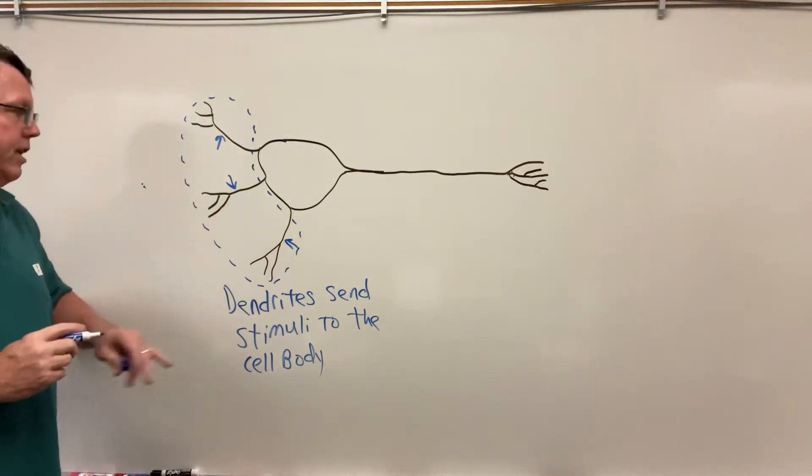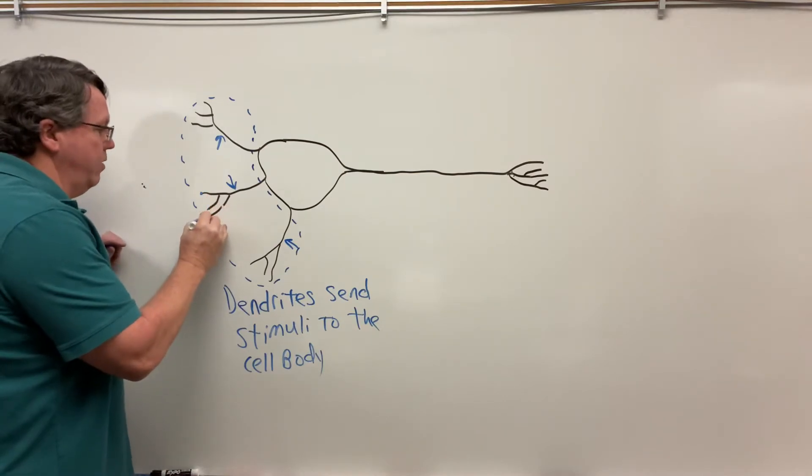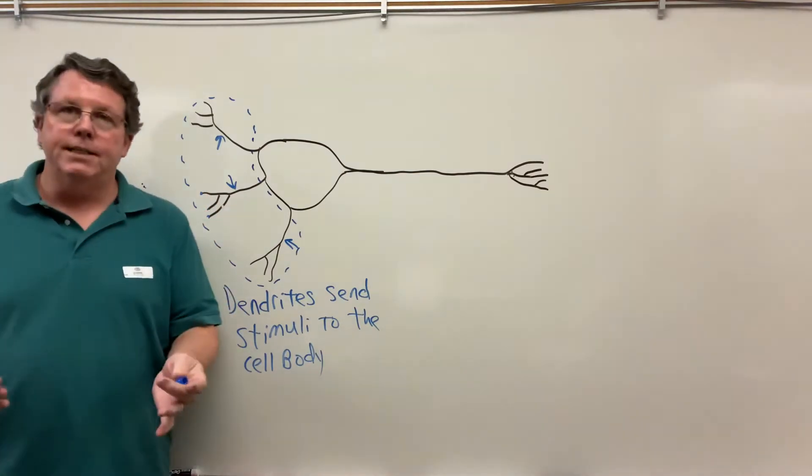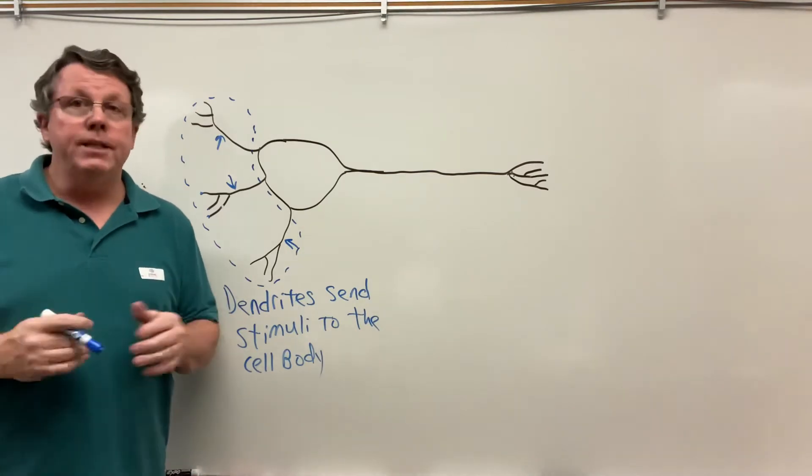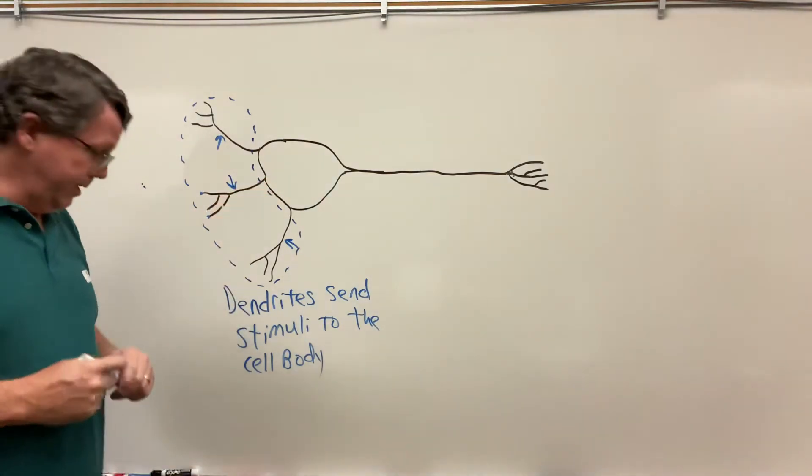That's what the dendrites are going to do. They have different types of receptors on the end for sensing different things such as temperature, vibration, touch, pressure, things such as that.